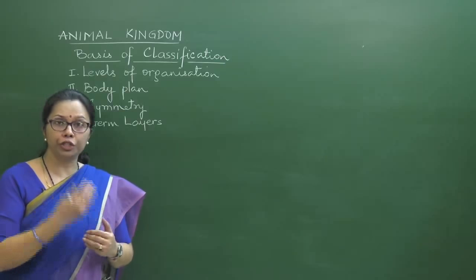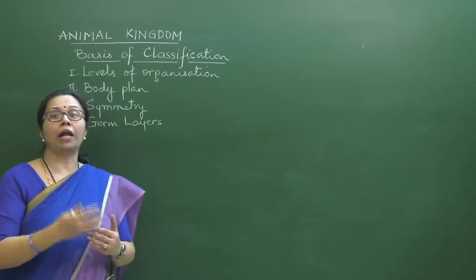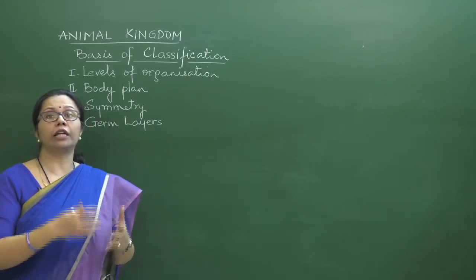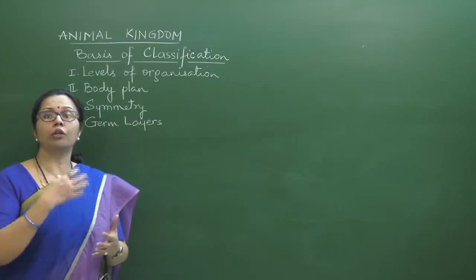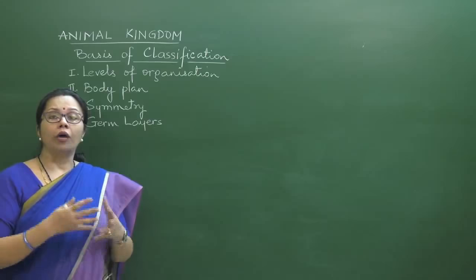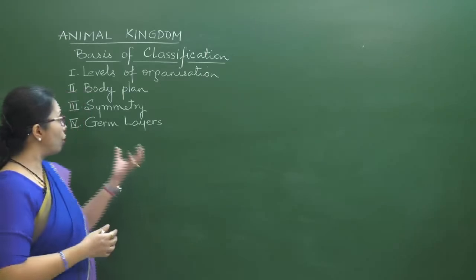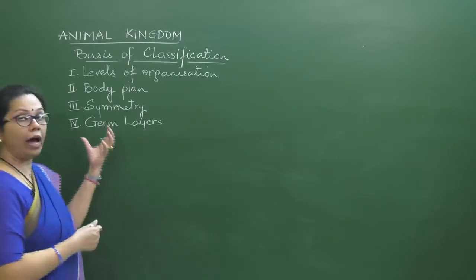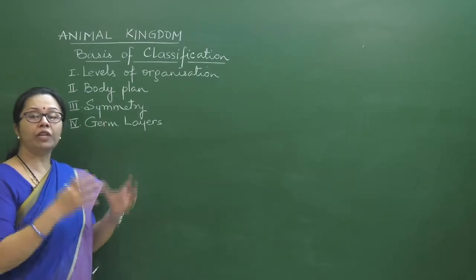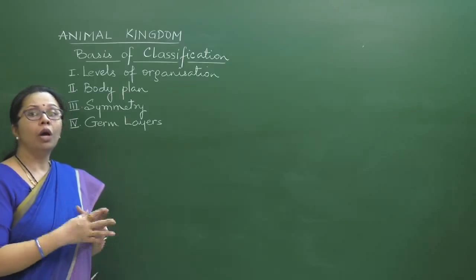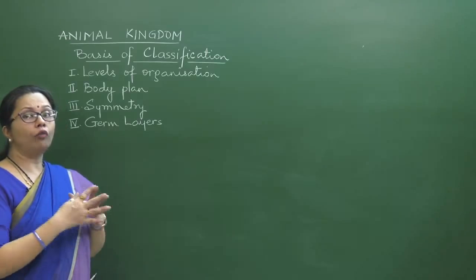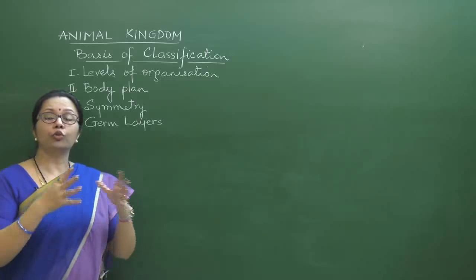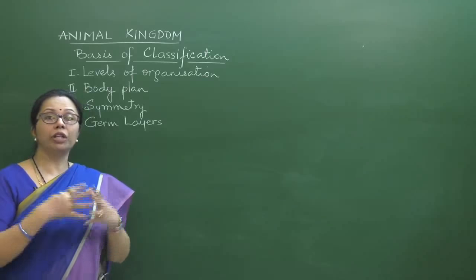During gastrulation, cells migrate from one location to another, arranging themselves as germ layers. These layers are called germ layers because they give rise to all the tissues, and in organisms with higher development, to organs and organ systems. The entire animal kingdom can be classified into two groups depending on what germ layers are present.